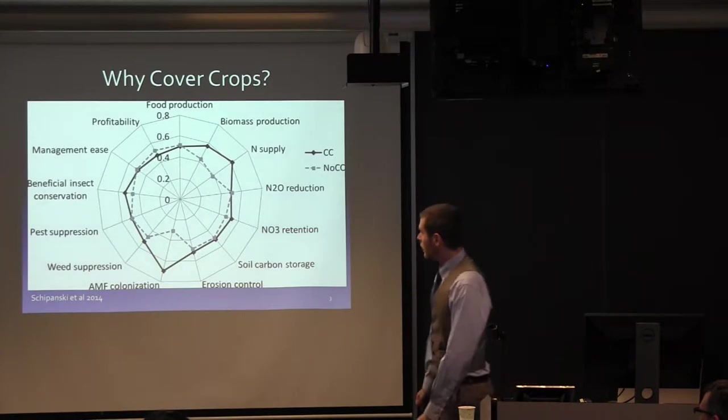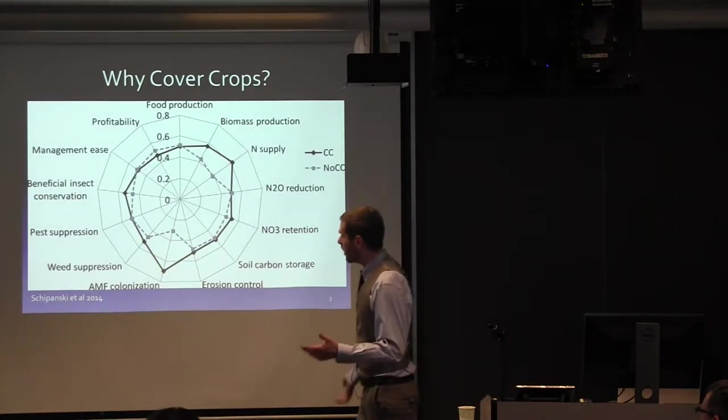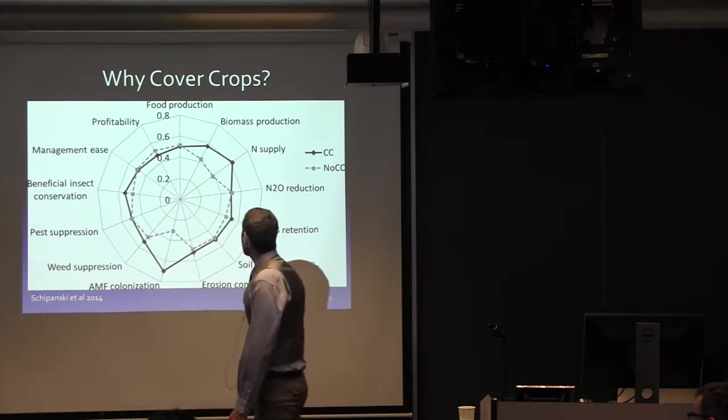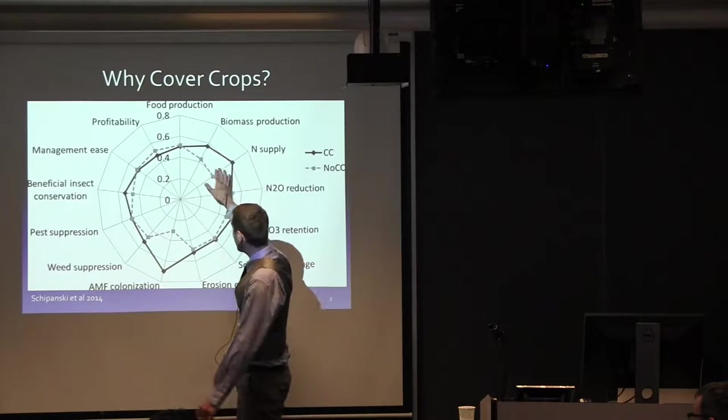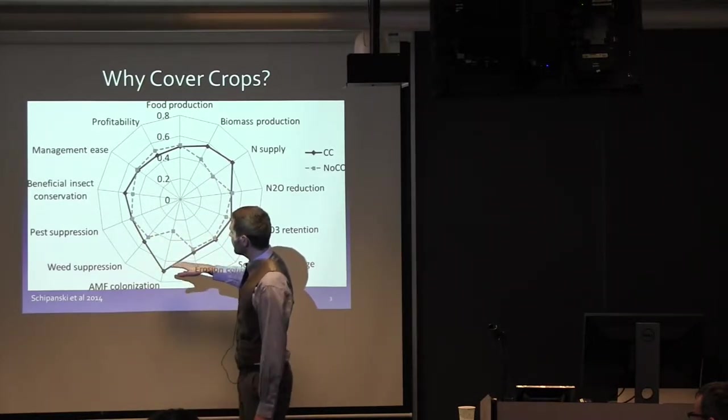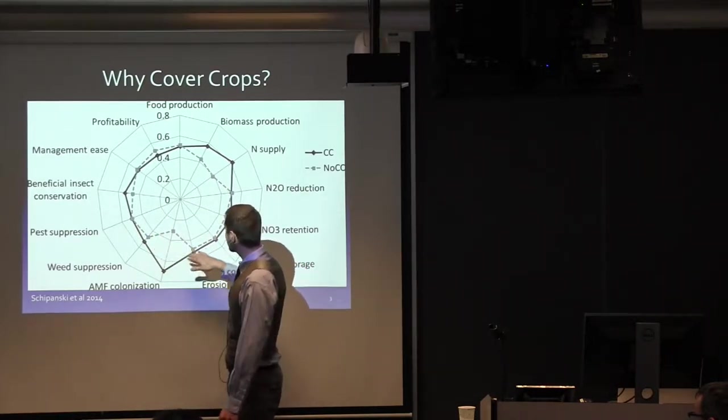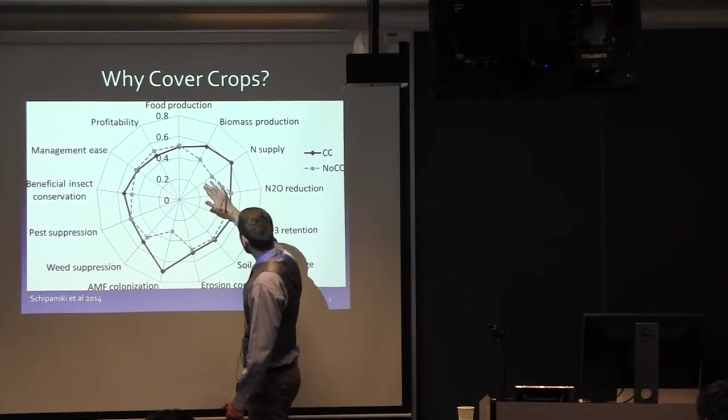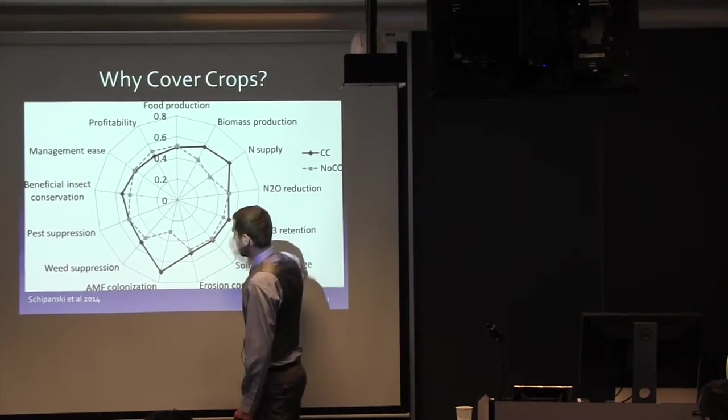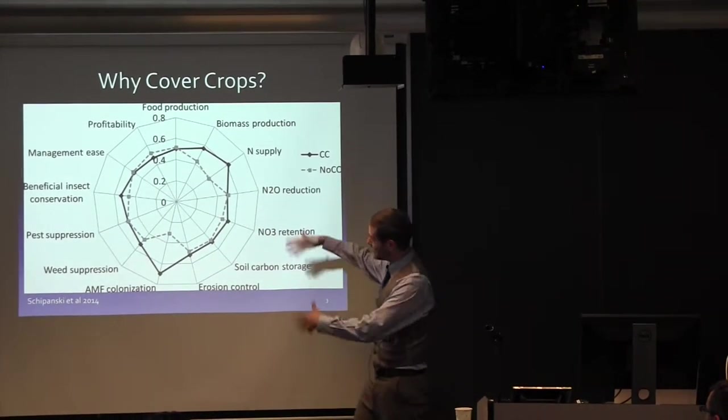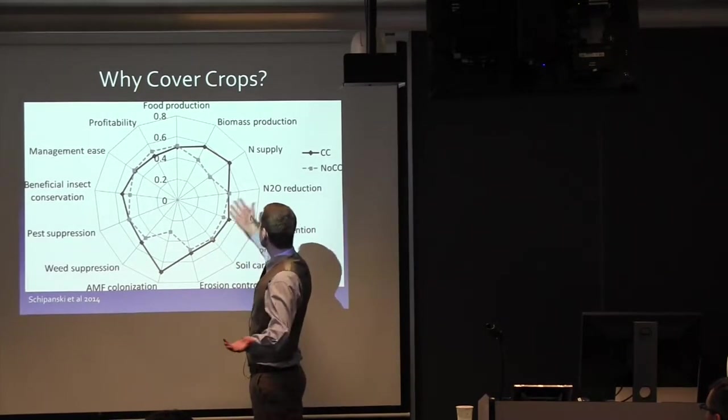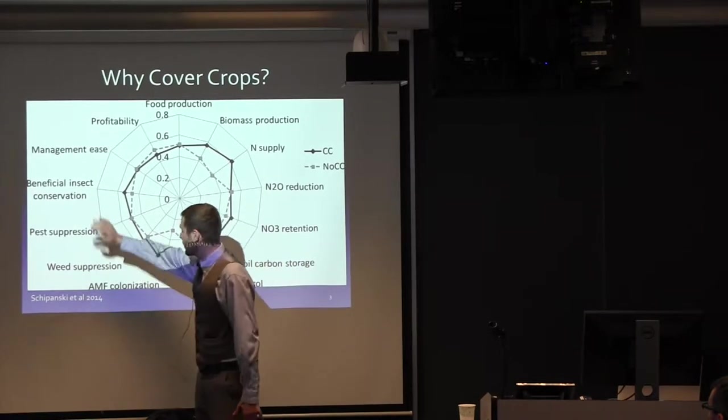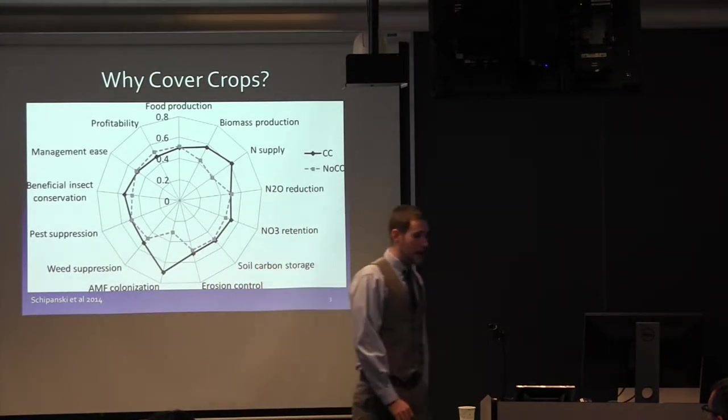This is an evaluation of ecosystem services provided by cover crops from Schipanski 2014. The black line is cover crops, gray is a rotation system that does not include cover crops. The farther away from the central point, the greater that ecosystem service is expressed when you use cover crops. So we can see you have a very diverse range of things that cover crops can give you, from nitrogen to weed suppression, pest suppression, and mycorrhizae.